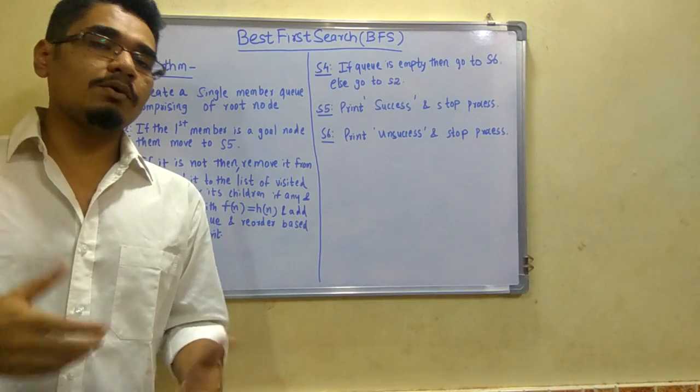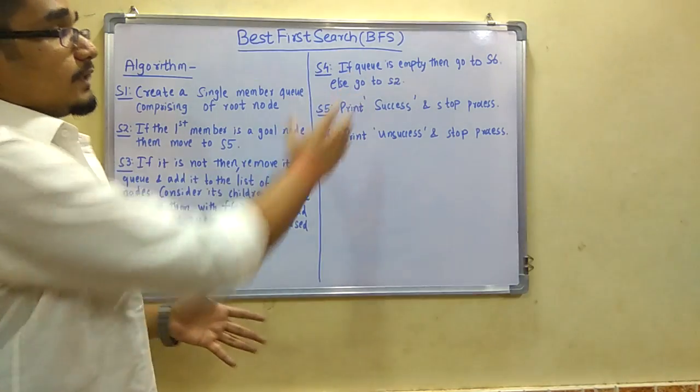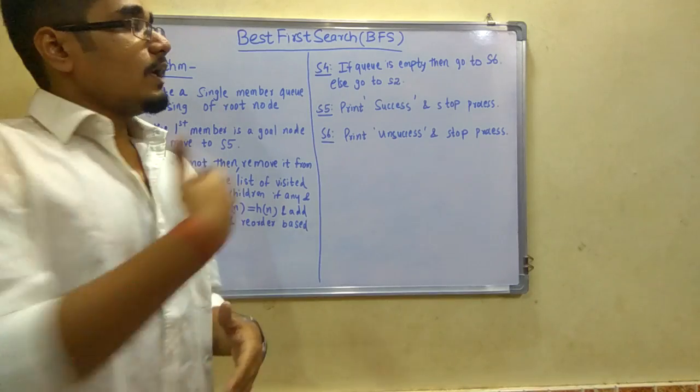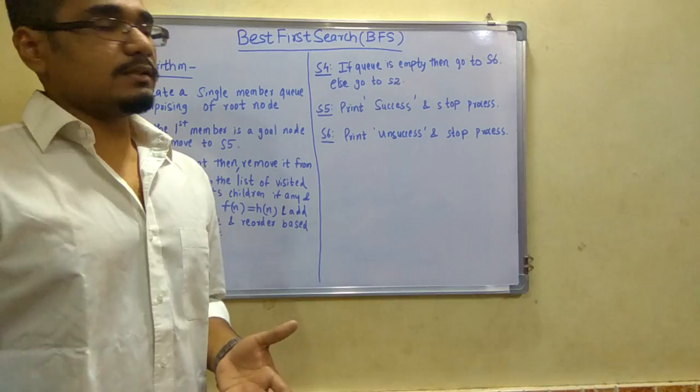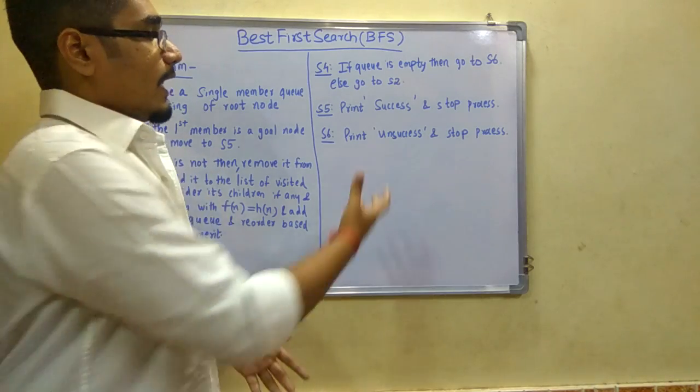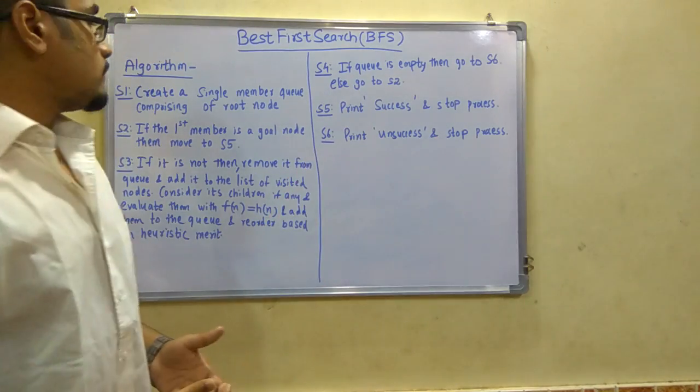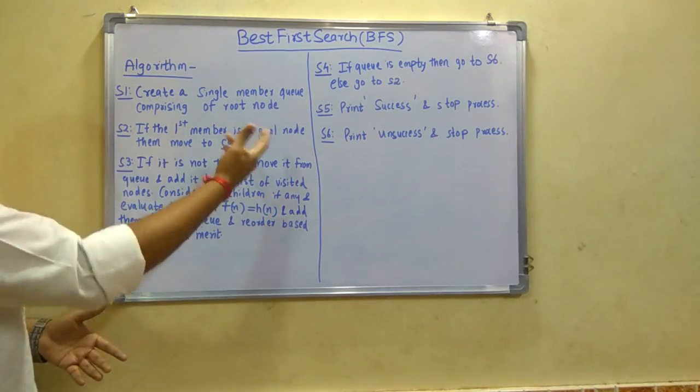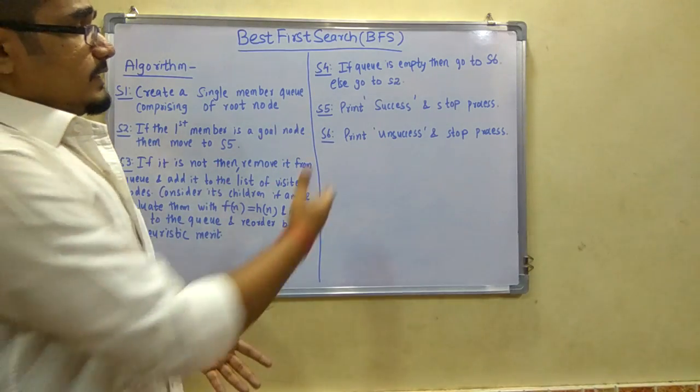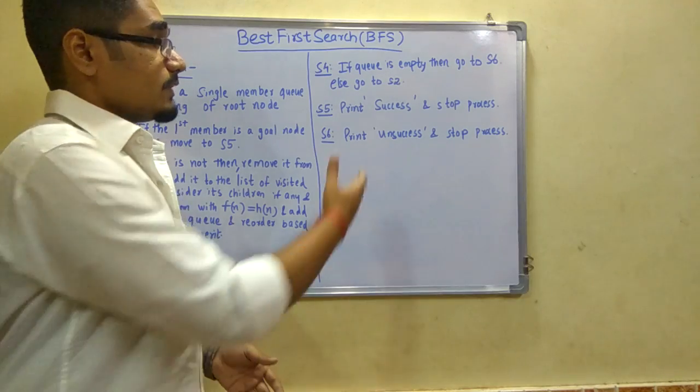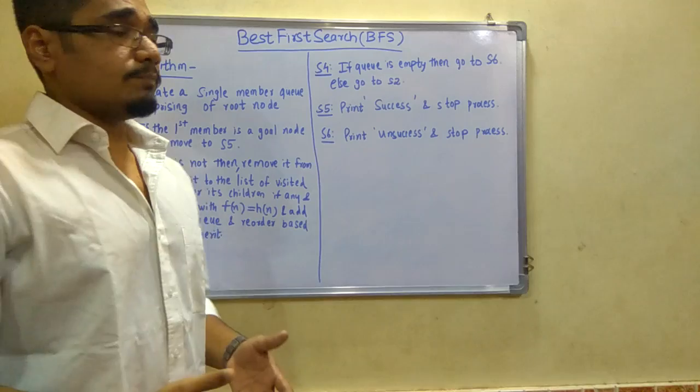Next, if the queue is found empty, then we go to step 6 - we are unsuccessful in finding the goal node, so we print unsuccess and stop the process. Else we move to step 2. Step 5 is print success and stop the process, and step 6 is print unsuccess and stop the process.